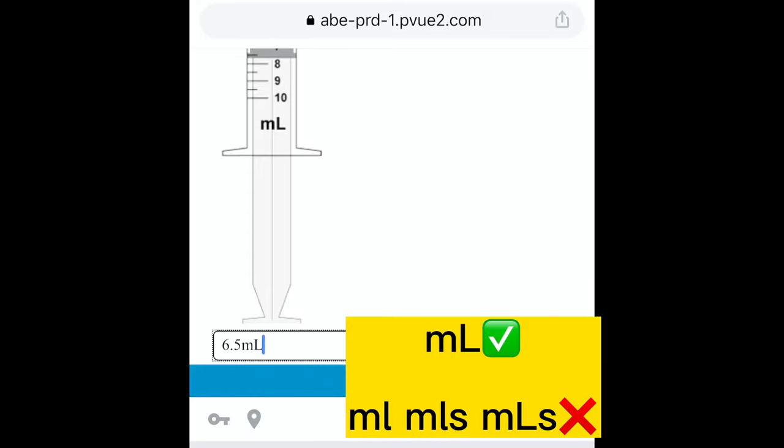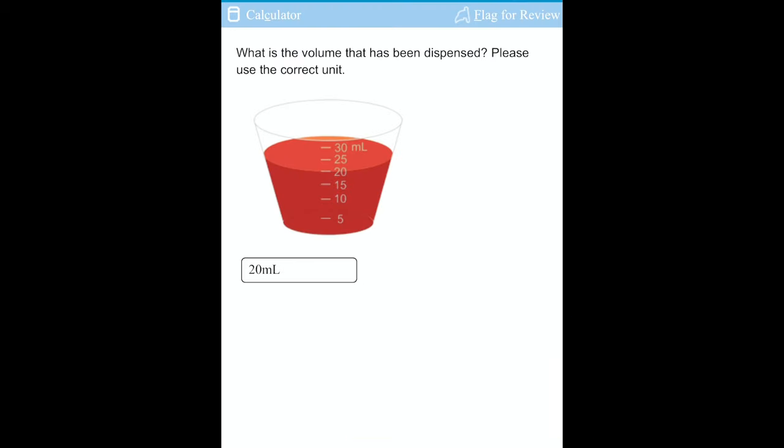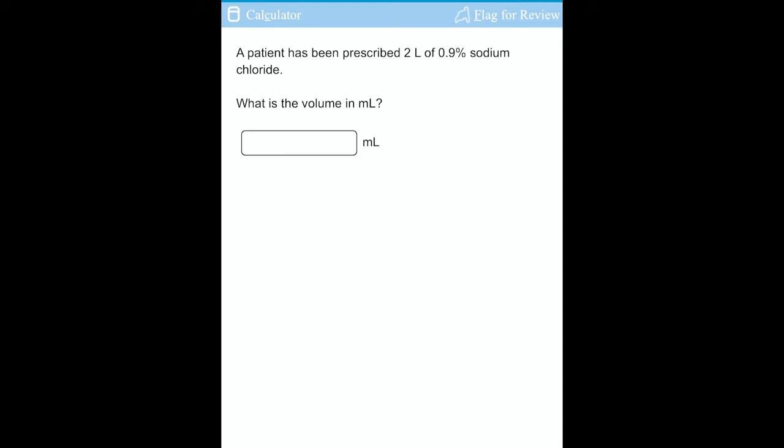Here also talks about the volume that has been dispensed. Check from the darker side of the container, there's one darker than the other. Use it to answer. I got 20, and then you add your mL to it.